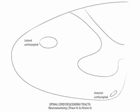Now label the medial aspect of the lateral corticospinal tract as carrying arm fibers, and the lateral aspect as carrying leg fibers. A central expanding cervical cord lesion, such as a syringomyelia, will affect the arm fibers prior to affecting the leg fibers.